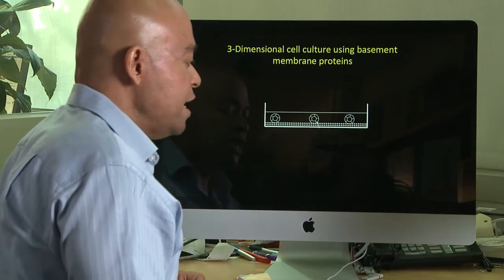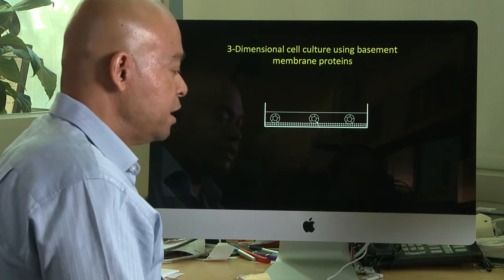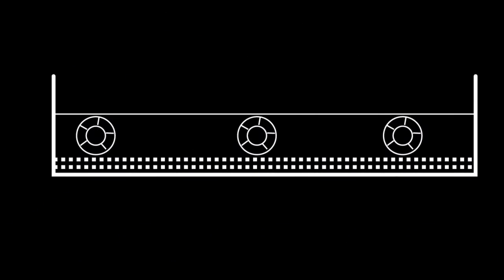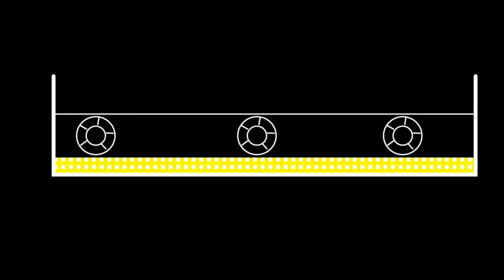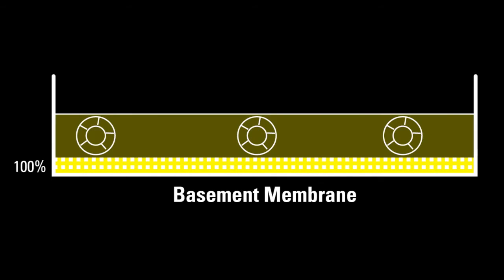We embed these lung adenocarcinomas in a three-dimensional cell culture, depicted here in cartoon form. The cells sit in small chambers, the bottom of which is covered by a hundred percent layer of what we call basement membrane — a meshwork of protein isolated from a different tumor. We also add a smaller 2% layer of this basement membrane component with the cells inside the dish.